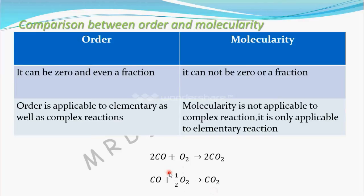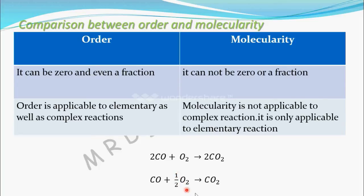Molecules will always combine in integer numbers only — two molecules of CO and one molecule of oxygen combine to give two molecules of carbon dioxide. The fractional reaction is not possible in reality; we only use fractions sometimes just to balance the reaction.